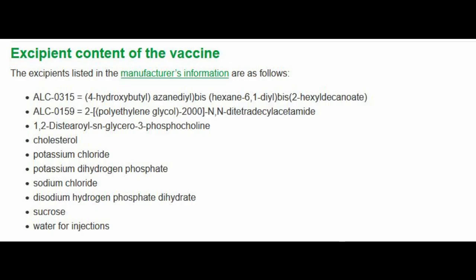Moving on to ALC0159 — this is the ingredient that bothers me the most. It contains polyethylene glycol 2000, otherwise known as PEG, or PEGylation, and that's the word I'll be using quite a lot. The 2000 is just the weight — PEGs come in all different weights for different types of medications, and this one is just 2000. It's not the highest number available; I think it goes up to 44,000, but 2000 is in this vaccine.